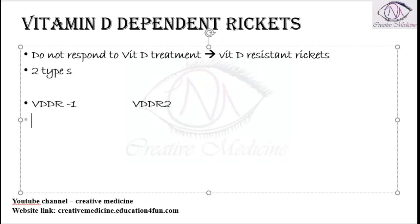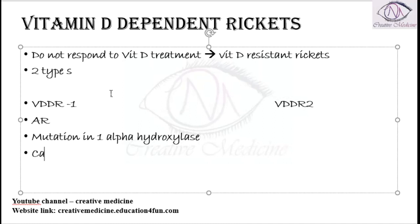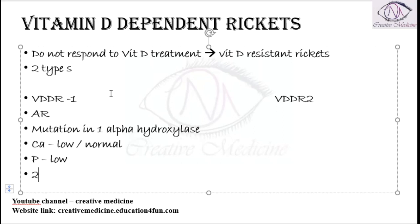Vitamin D Dependent Rickets Type 1 is an autosomal recessive disease. There is a mutation in the gene encoding 1-alpha hydroxylase. Because of this defect, active vitamin D is not formed. Calcium can be low or normal, phosphate can be low, and 25-hydroxy vitamin D3 is normal or high.